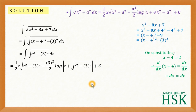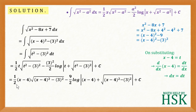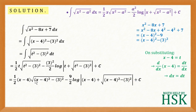Now I replace t with x − 4 to get: (1/2)(x − 4)√((x − 4)² − 9) − (9/2) · log((x − 4) + √((x − 4)² − 9)) + C. This can be further simplified by noting that (x − 4)² − 3² = (x − 4)² − 9, which equals x² − 8x + 7, the original expression under the square root.